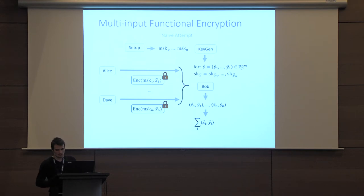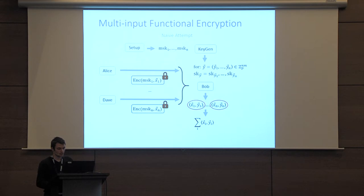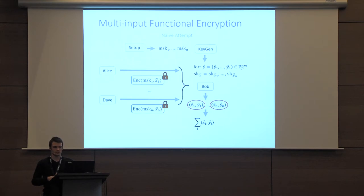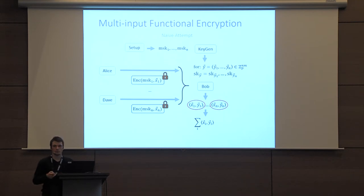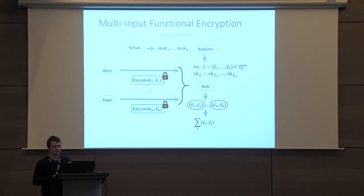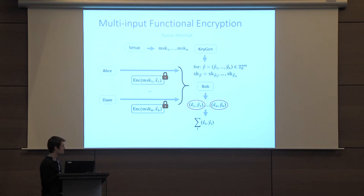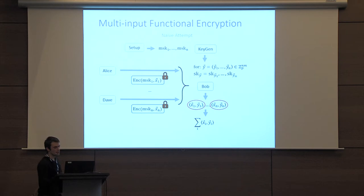The problem is that Bob gets more information than simply the sum of all xi·yi — he also gets all the partial inner products, which should not be leaked. At least in the private key setting, this should be hidden. Bob should only get the total sum. In the public key setting this leakage is inherent and the naive approach would actually work as a valid multi-input public key FE. But in the private key case, the technical challenge is to hide all of these partial inner products while still allowing Bob to compute the full sum of all xi·yi.